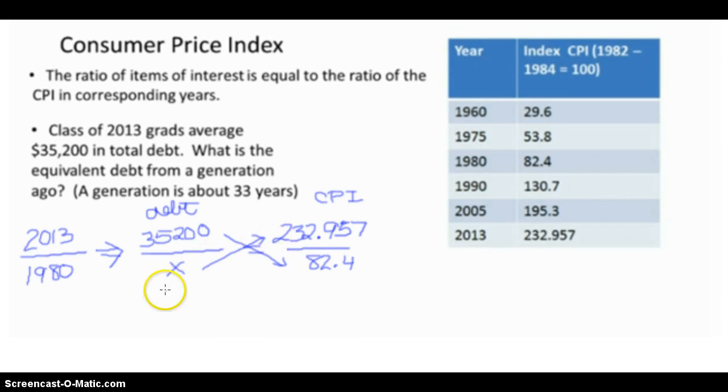On the first diagonal, I have 232.957x. And that's equal to, on the second diagonal, and I'm going to type that into my calculator, and I get 2,900,480 when I multiply the 35,200 times the 82.4.